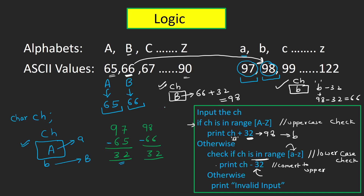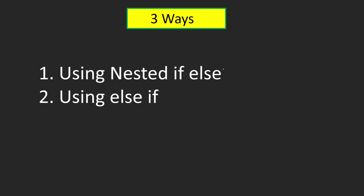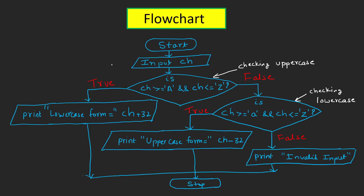You might get confused about where to add 32 and where to subtract 32. Here's a memory tip: capital means big, so a big character has a small ASCII value starting from 65. A smaller (lowercase) character has a larger ASCII value starting from 97. This way it's easy to remember when to subtract 32 and when to add 32. We'll implement this program three ways: nested if-else, else-if, and a bonus third method revealed at the end.